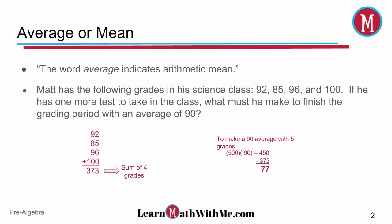So we know he already has 373 from those first four tests. We'll subtract that from 450, and he just needs to make a 77 to pull a 90 for that particular class. So your answer is 77.